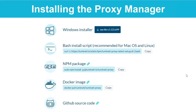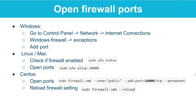To check if the firewall is enabled, you want to run the sudo UFW status in your CMD. Then you need to follow the instructions based on the operating system that you are using.